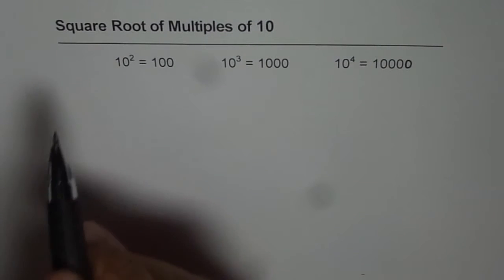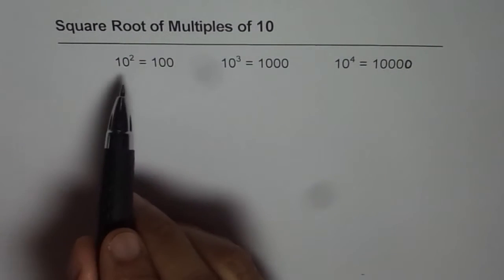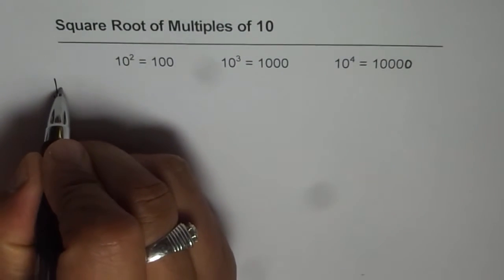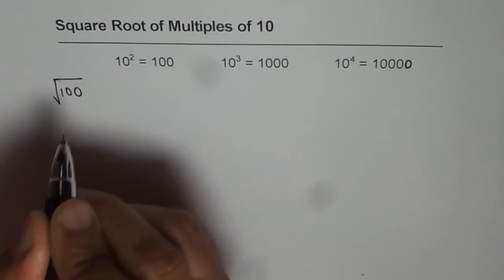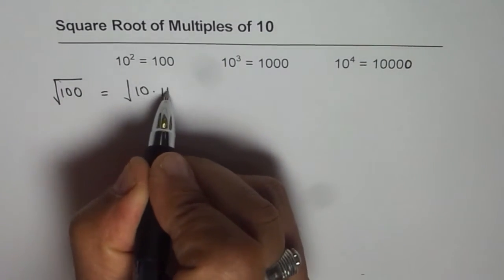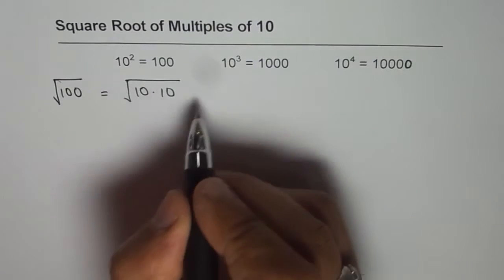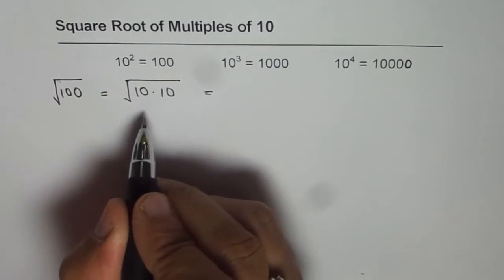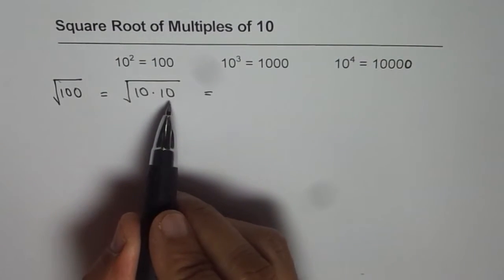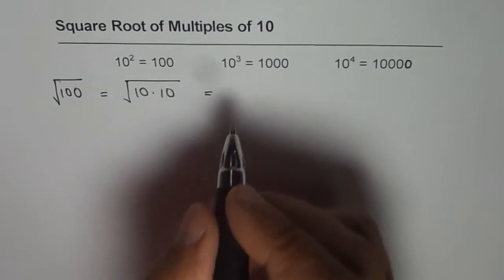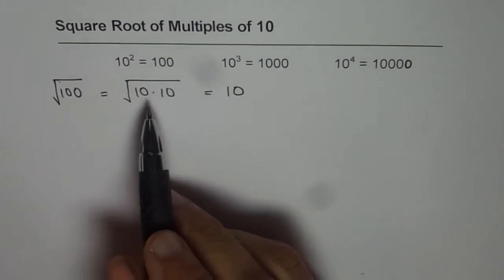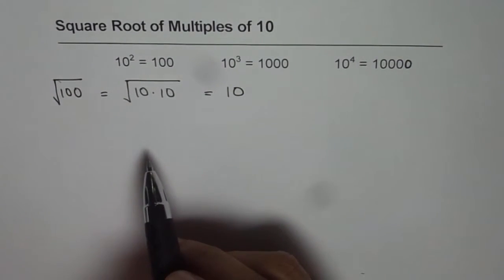Whenever we are trying to find square root, let's start with square root of 100. So if I say what is square root of 100, then it means 100 could be written as 10 times 10, that is 100. Square root is one of the two same numbers which multiplied by itself — so that gives us 10 as our answer. Working with 10s and its multiples is kind of simple.